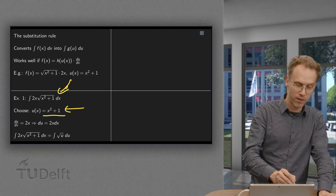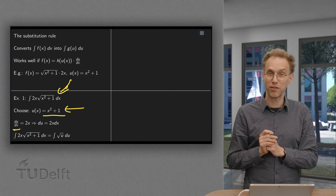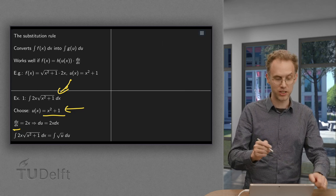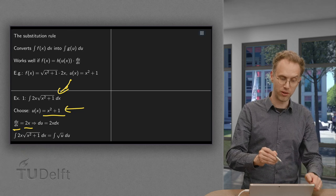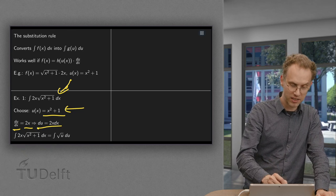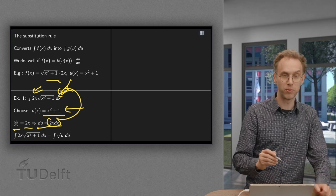Do so by the following: We compute du/dx, so we basically compute the derivative of u. Well, u equals x squared plus 1, so du/dx equals 2x, and then we find du equals 2x dx. Well isn't that convenient? This entire 2x dx is here and becomes 1 du.